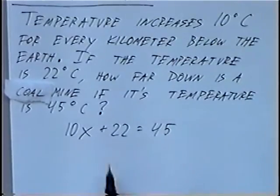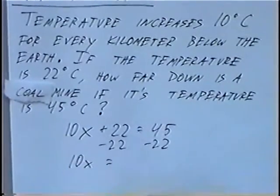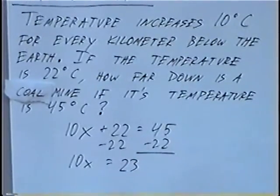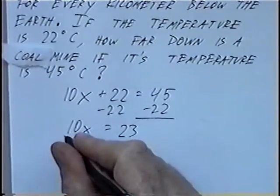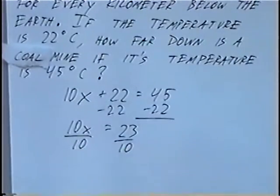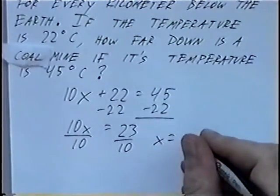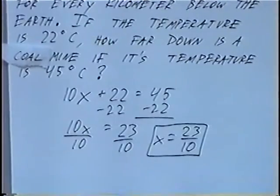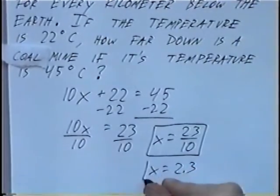We can solve for x. The number away from x is plus 22 — we can cancel by subtracting 22 on both sides. So 10x would come down, and 45 minus 22: 5 minus 2 is 3, 4 minus 2 is 2, so equals 23. 10x equals 23. To get rid of the 10 in front of x, we can divide by 10. The fraction 23 over 10 does not reduce, so we can leave it as 23 over 10, or move the decimal one spot to get x equals 2.3. So the coal mine is 2.3 kilometers below the earth.